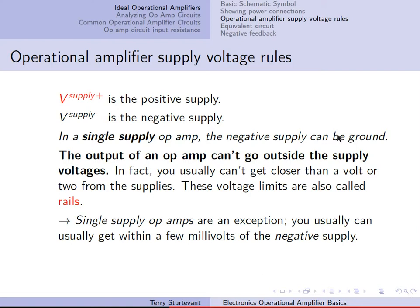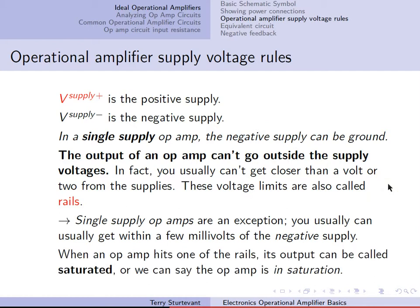Single supply op-amps are an exception — you can usually get within a few millivolts of the negative supply on a single supply op-amp, since in a single supply op-amp the negative supply can be ground. When an op-amp output hits one of the rails, the output is called saturated, or we can say the op-amp is in saturation.